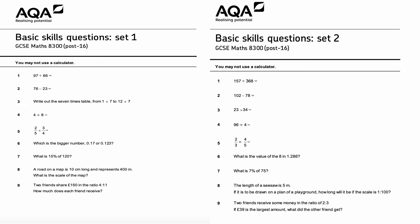Question number one: 97 plus 66. Using column addition, putting everything under the correct place values — lining up tens and units. 7 plus 6 is 13, carry the one. 9 plus 6 is 15, plus that one is 16. So the answer is 163.